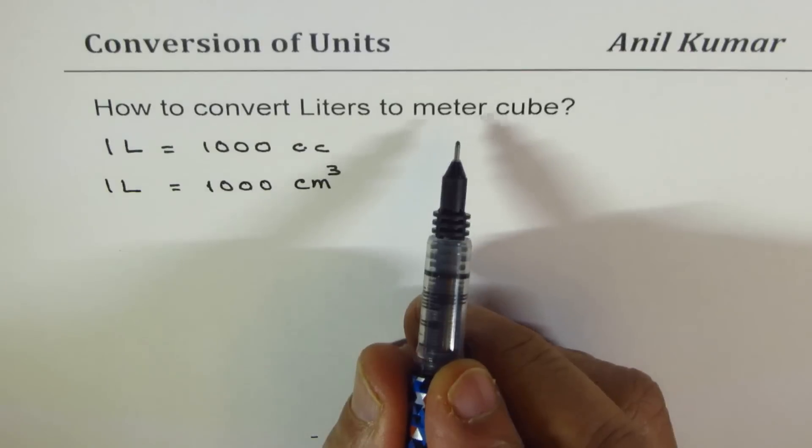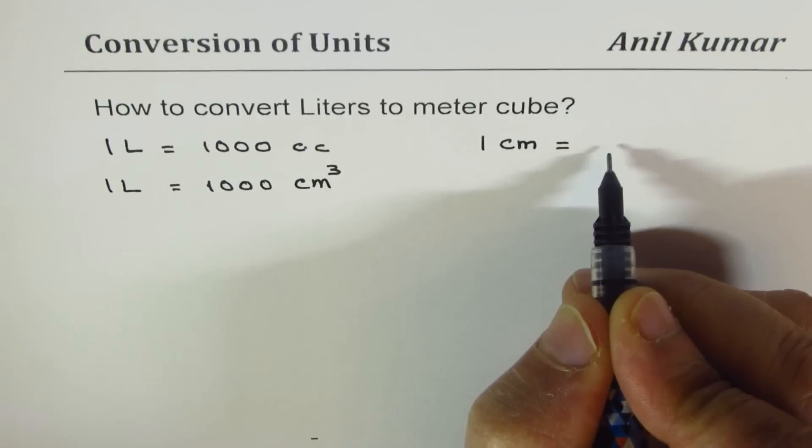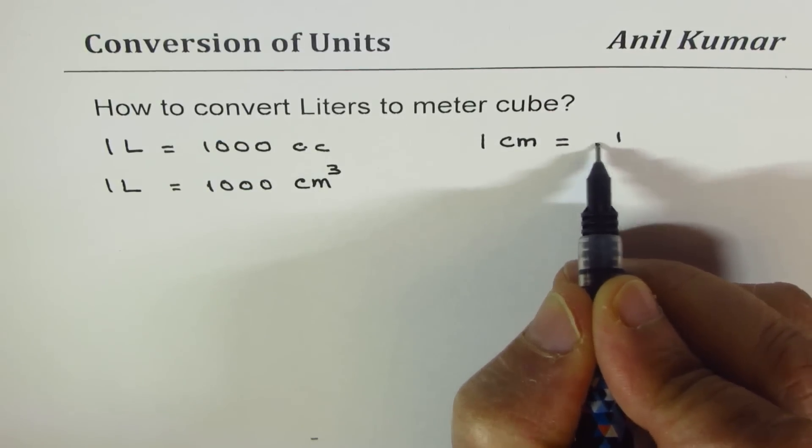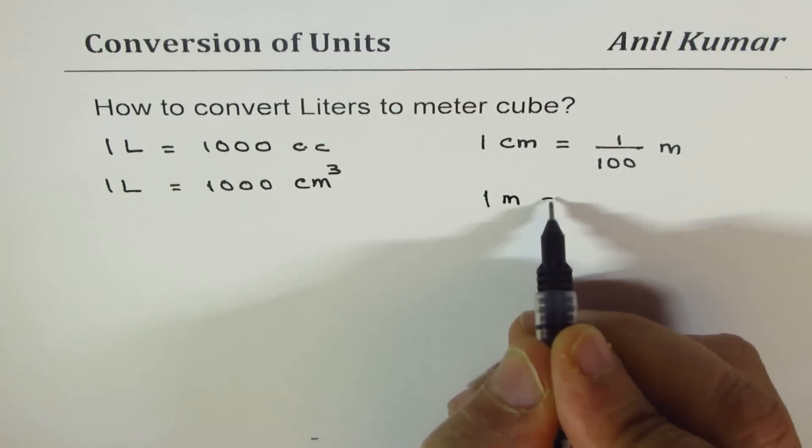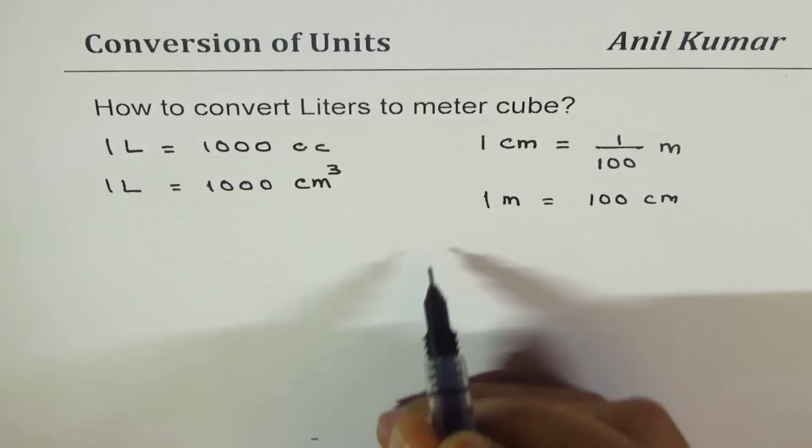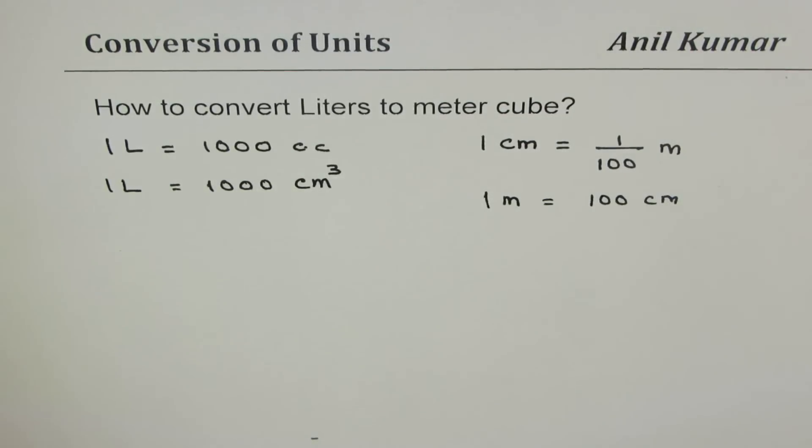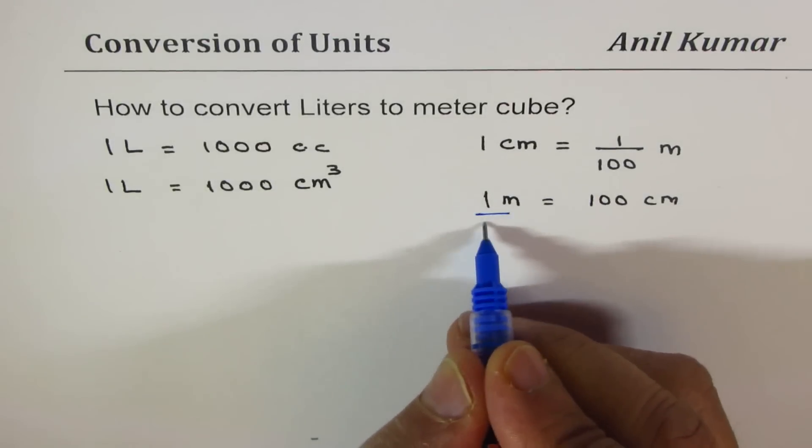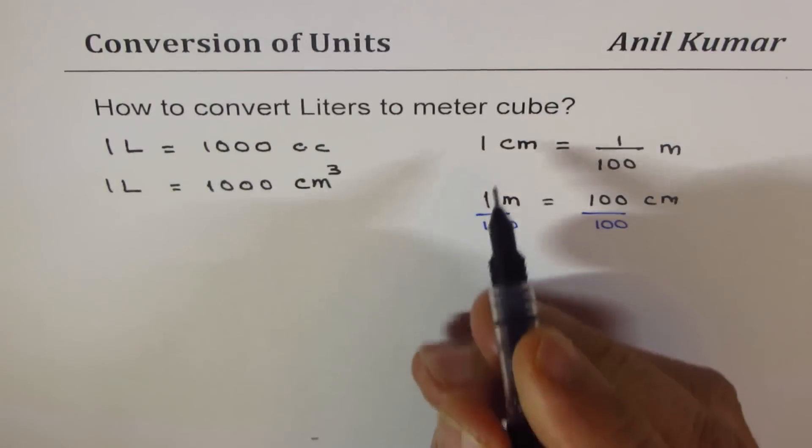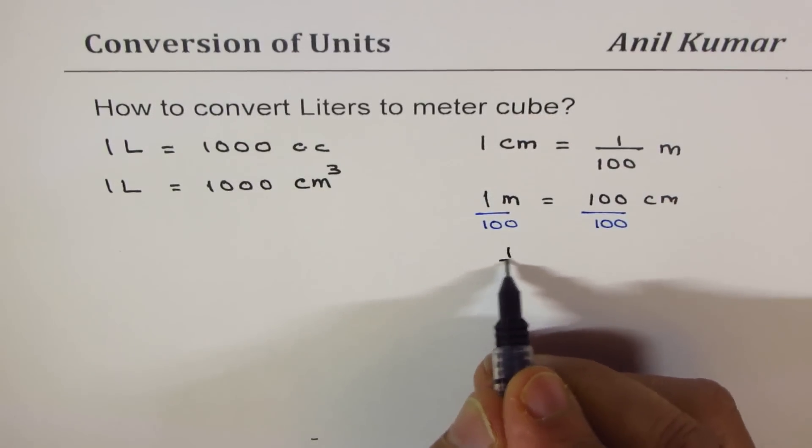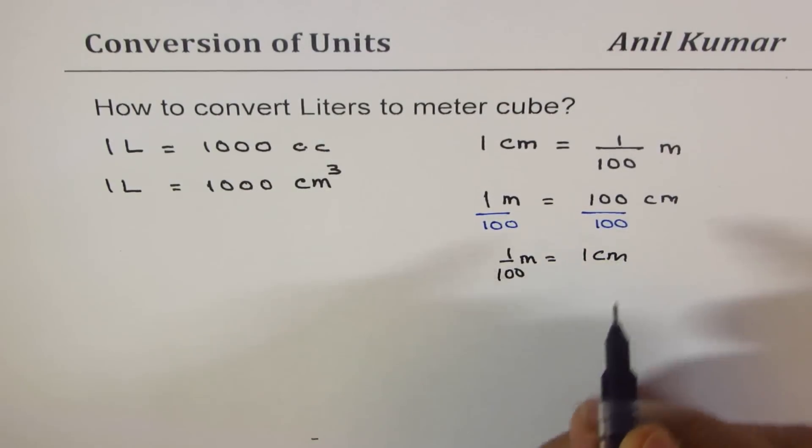One centimeter is equal to one over 100 meter. You know that one meter equals 100 centimeters, so if I have to get what one centimeter equals, I need to divide both sides by 100. So we get that one over hundred meters is equal to one centimeter.